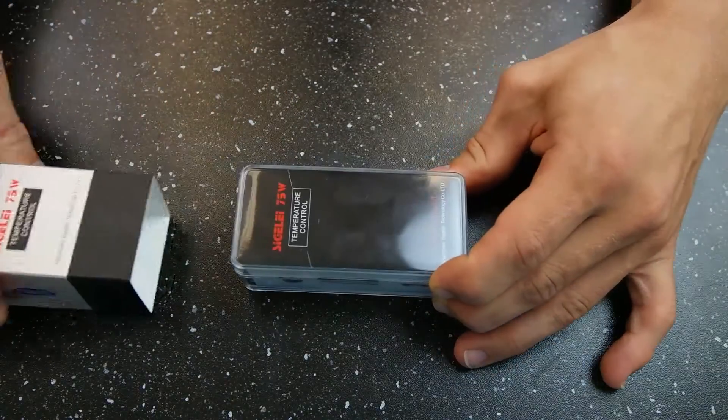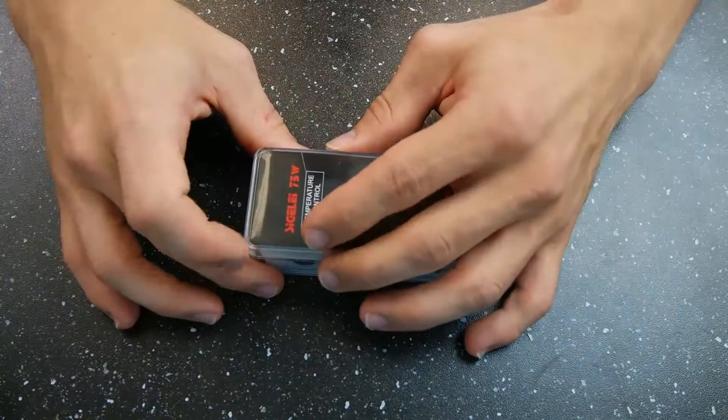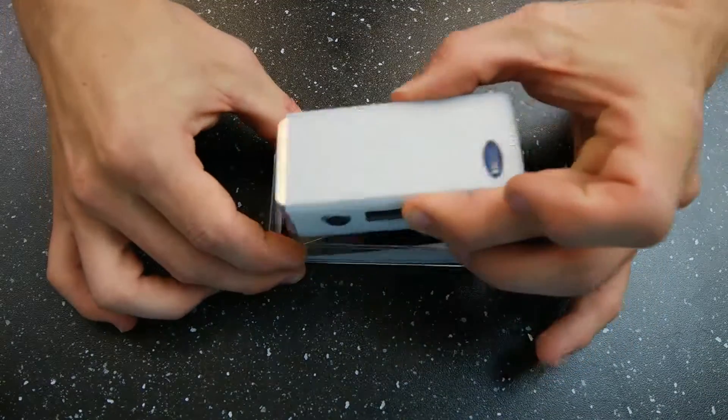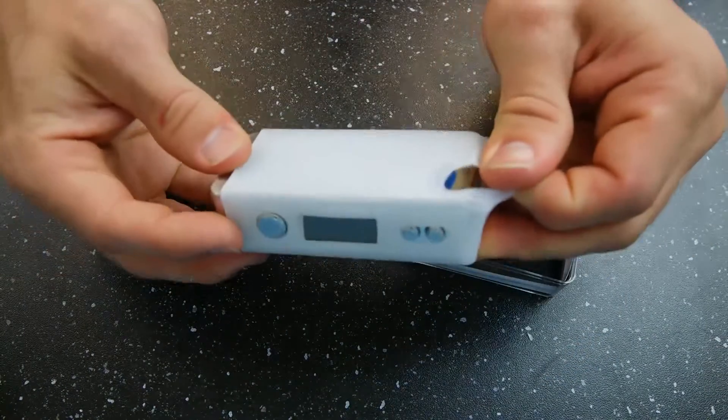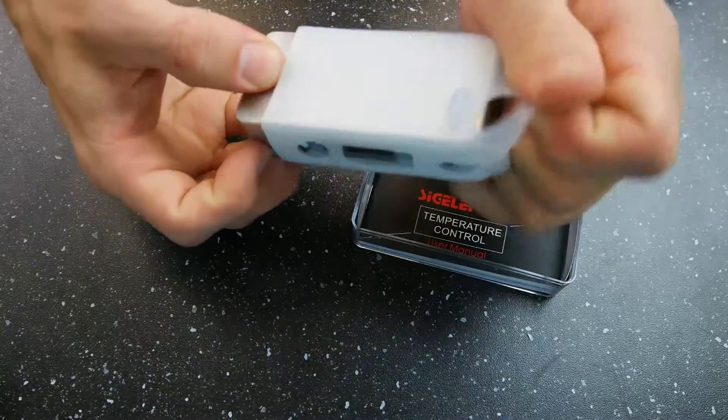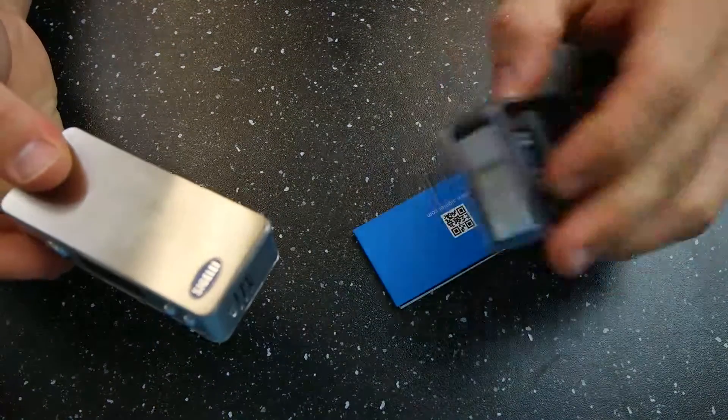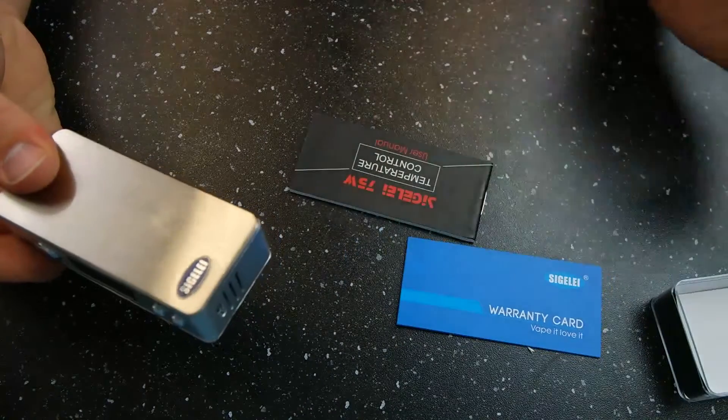So we just kind of slide this cover off here, go ahead and pop this open, we have the device right here with the silicone case on it, we'll go ahead and just peel that silicone case off. You do get a booklet and a warranty card in there.